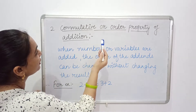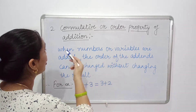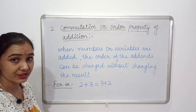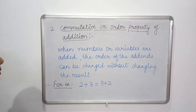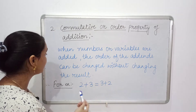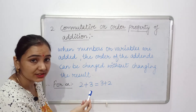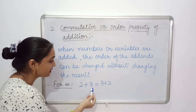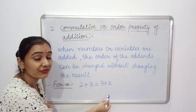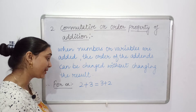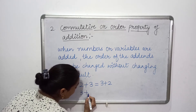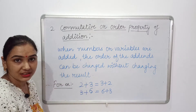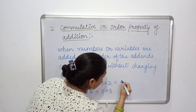The second property is the commutative, or order property of addition. By the name itself, we can say it is an order property. This property states that when numbers or variables are added, the order of the addends can be changed without changing the result. For example, 2 plus 3 can be written as 3 plus 2, and 3 plus 6 equals 6 plus 3. The results will be the same in both cases.